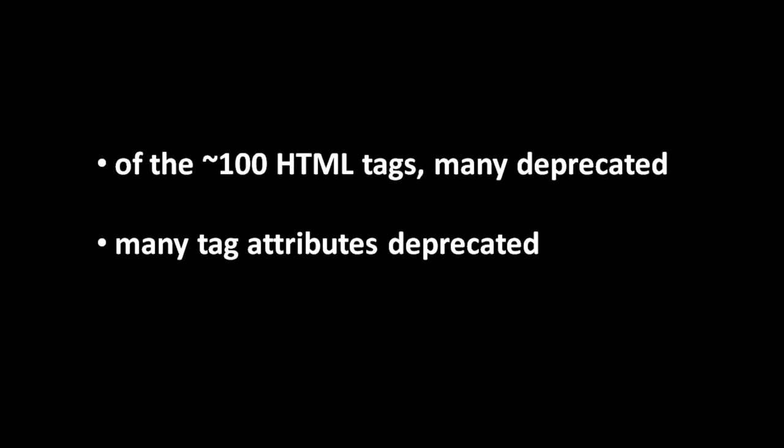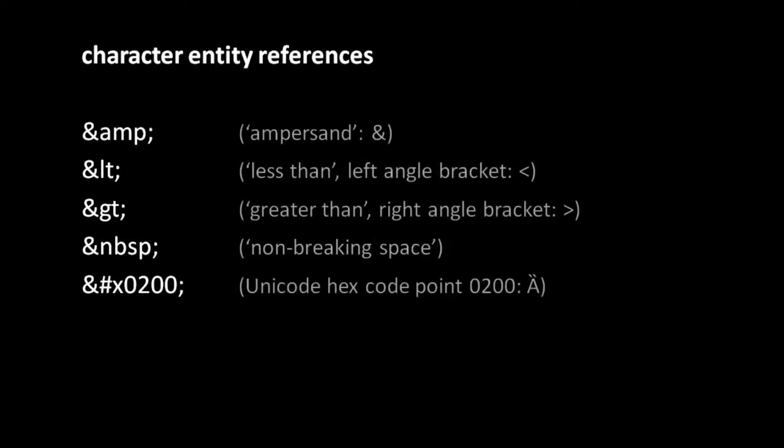Tags pretty much encompass the entire syntax of HTML, though there is one more thing: character entity references. A character entity reference is basically just the HTML equivalent of an escape sequence — they simply allow you to include in the content of a tag characters which you otherwise couldn't, such as the less-than and greater-than symbols. We write these character entity references starting with an ampersand and ending with a semicolon, with the text in between specifying which character entity reference it is.